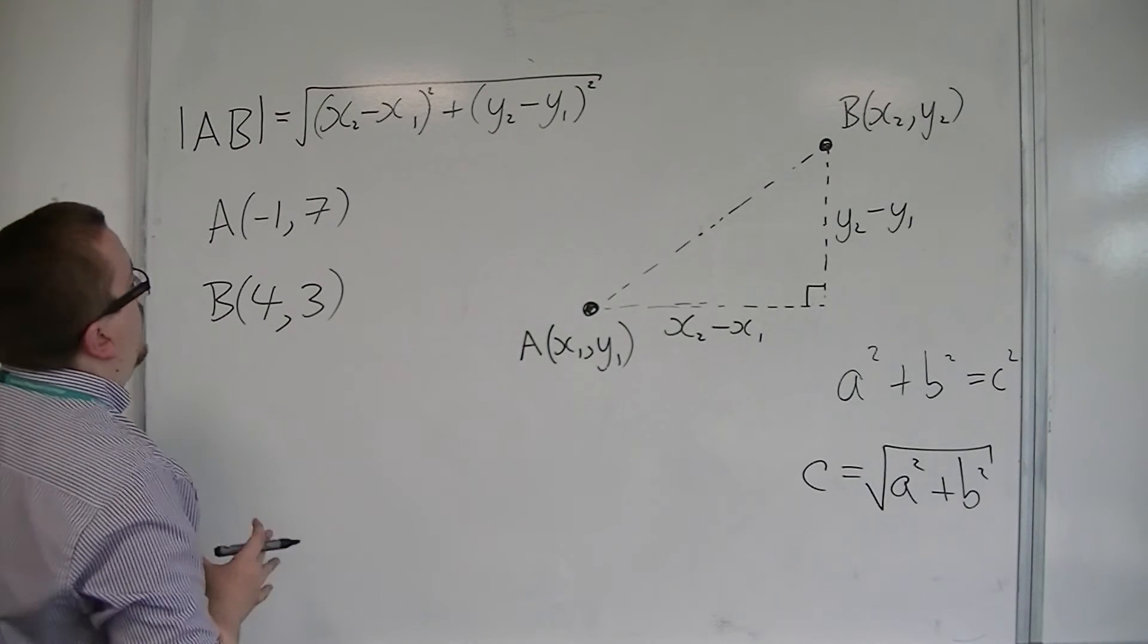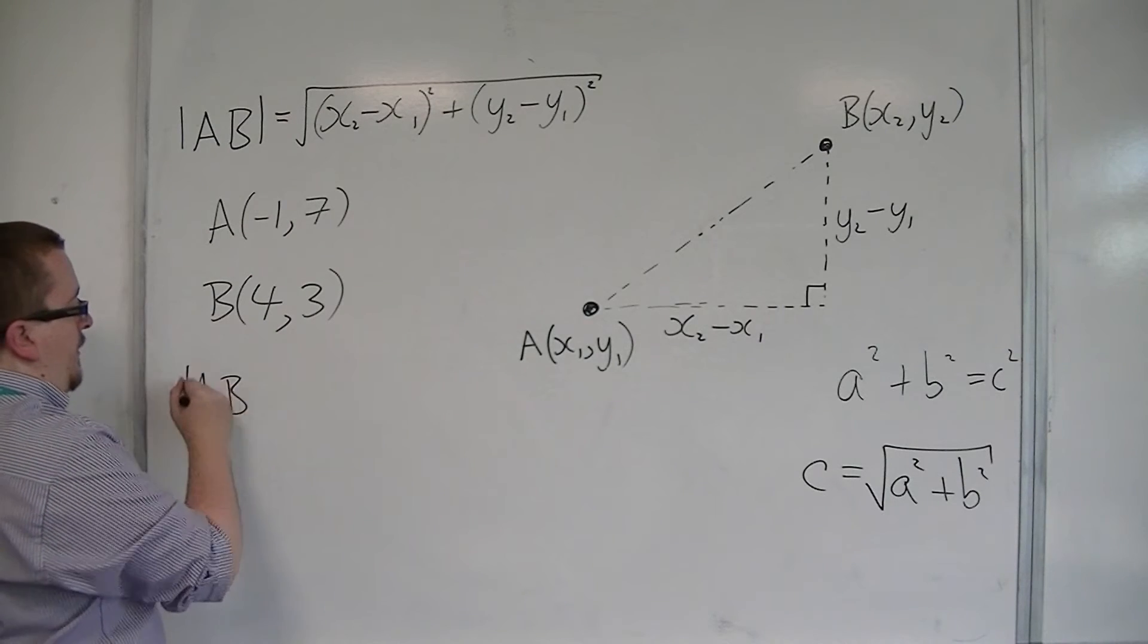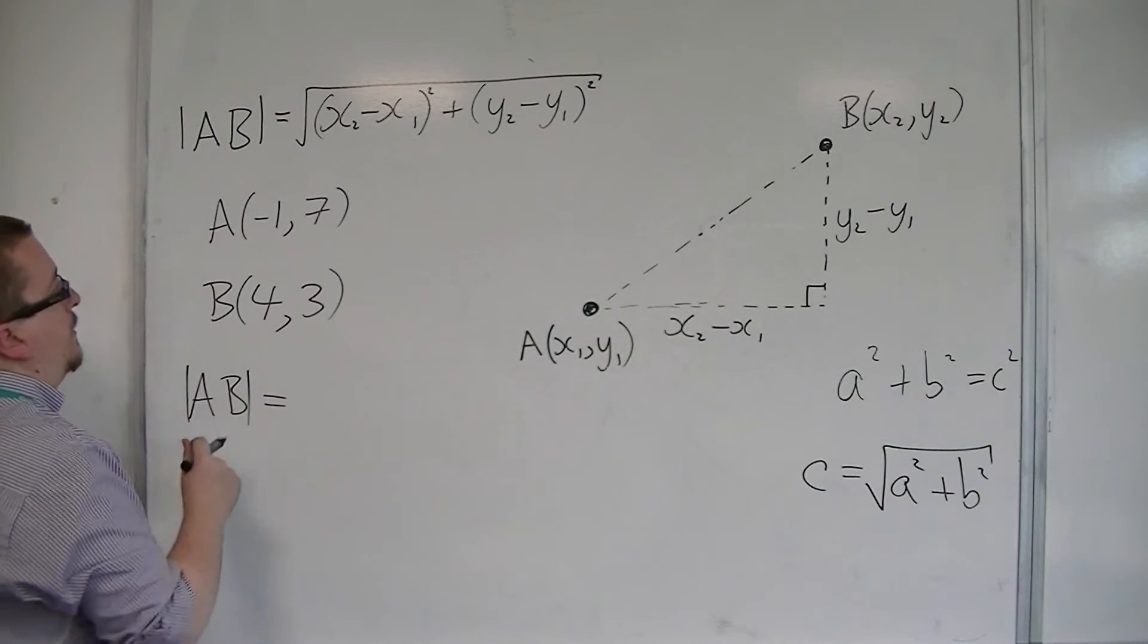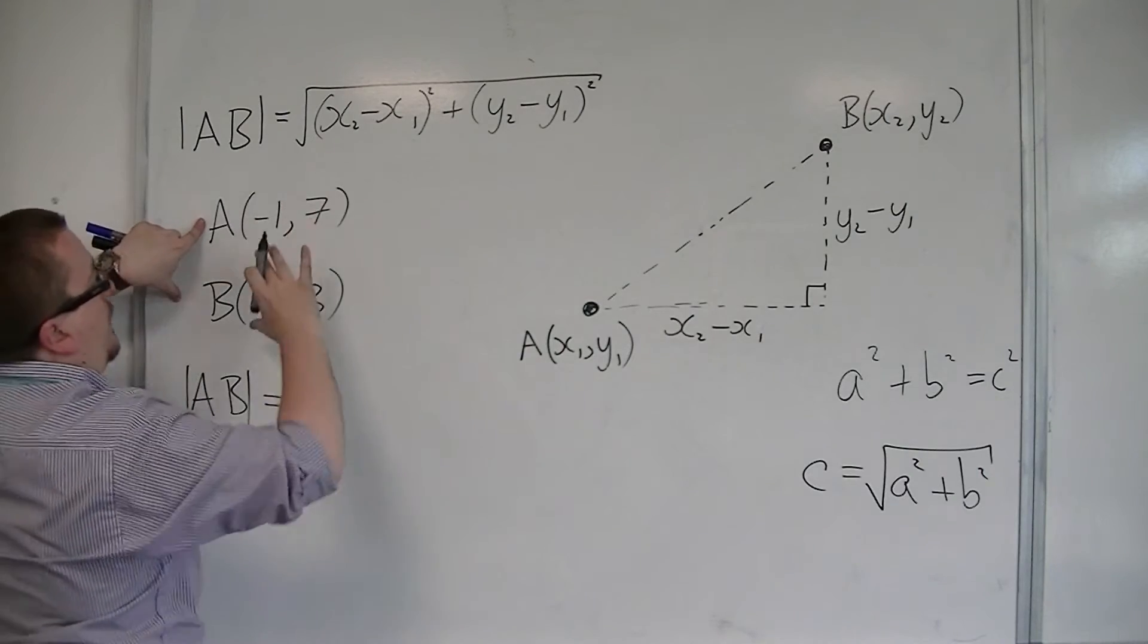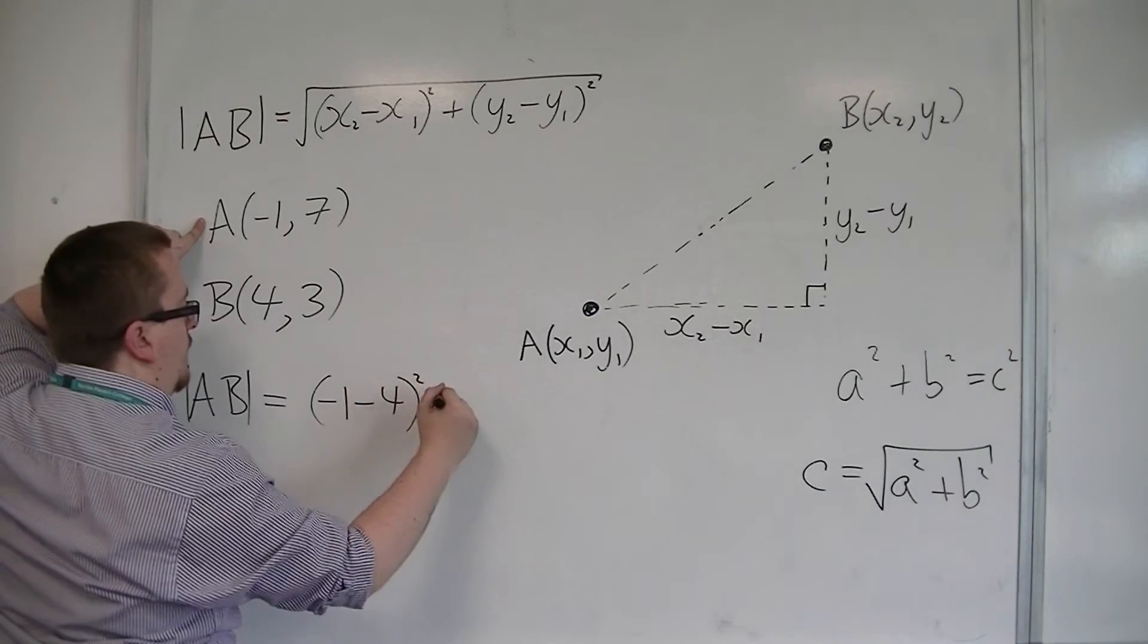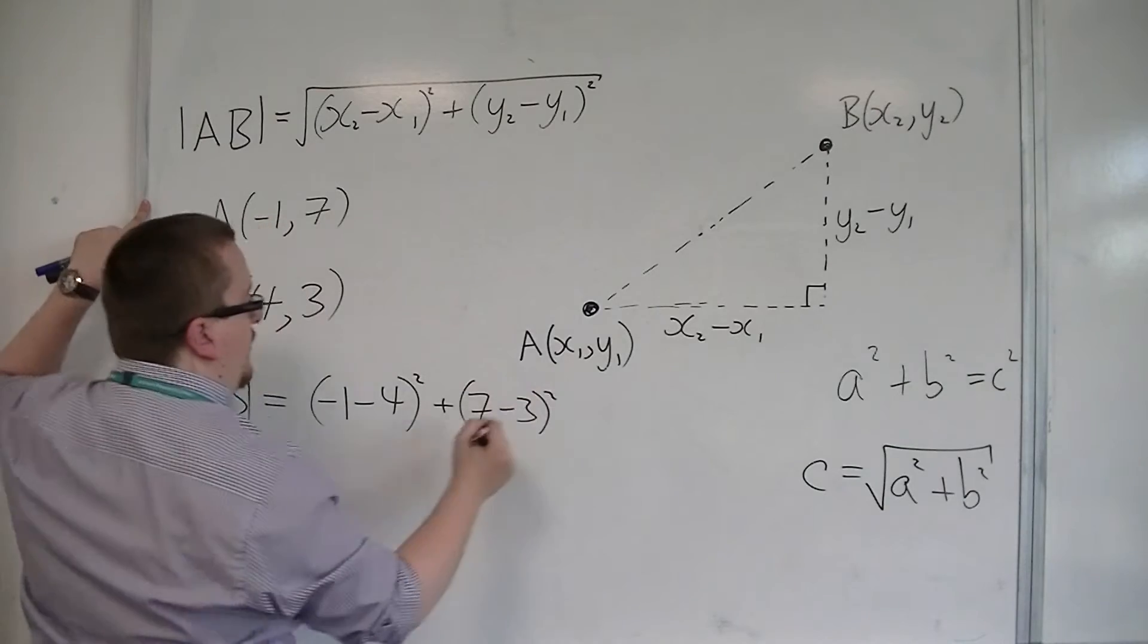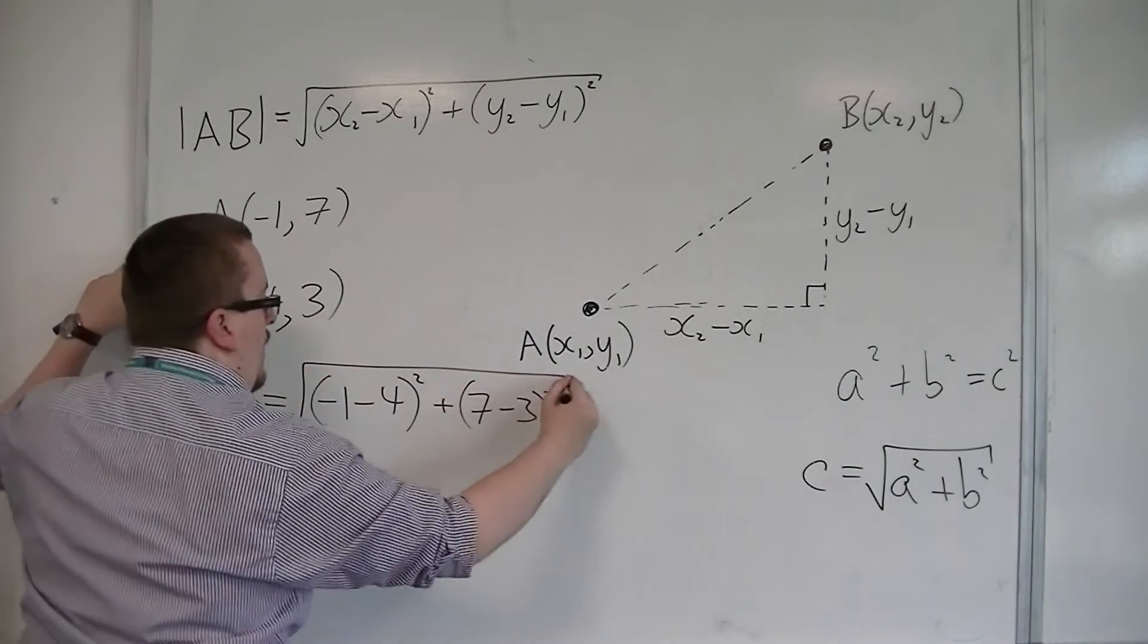then what I can do is I can say, well, I want the difference in the x-coordinates. So minus 1, take away 4, and I'm going to square that, plus the difference in the y-coordinates, so 7, take away 3, and I'm going to square that, and then square root.